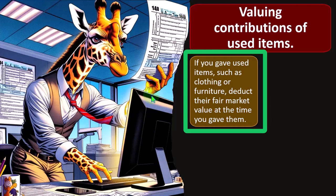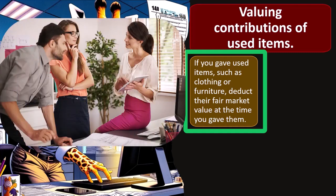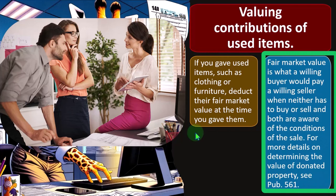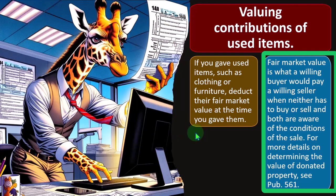The question is, how do you know what the fair market value is? Fair market value is determined by trading or selling things on the open market. If you have used clothes, you'd have to find a buyer who would want them — and then what would be the fair value of that transaction? It's difficult to say, which is probably why you're giving it away. Fair market value is what a willing buyer would pay a willing seller when neither has to buy or sell, and both are aware of the conditions of the sale. For more details on determining the value of donated property, see Publication 561.